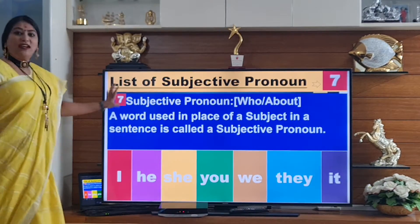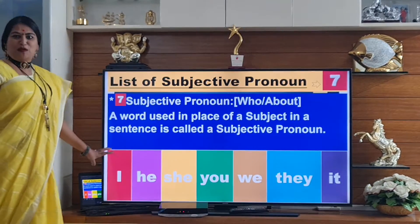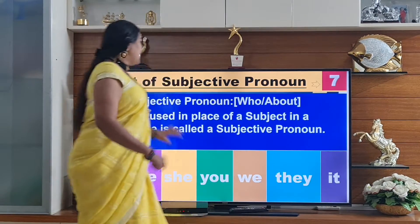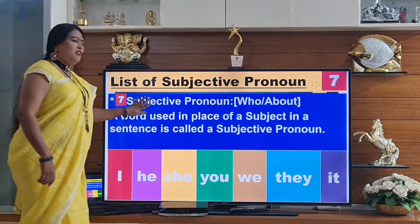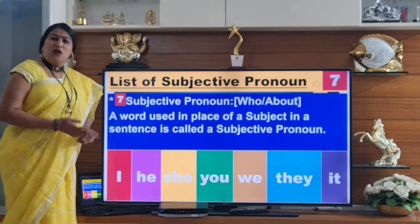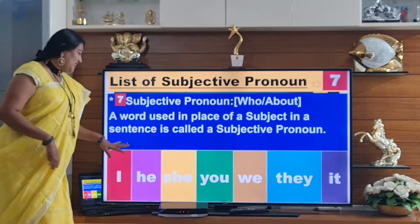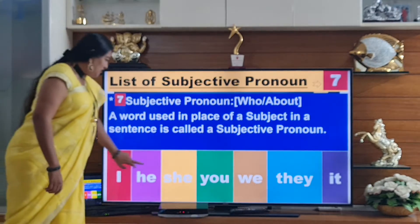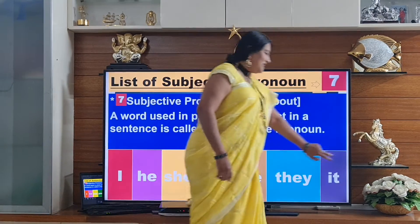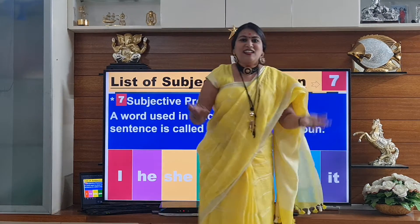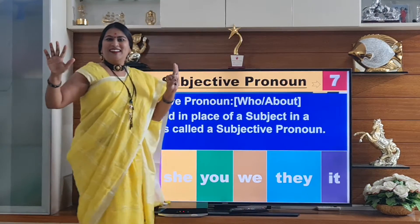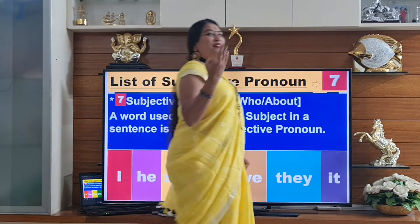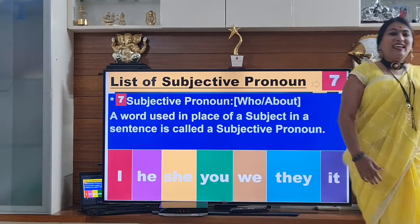Now let's see what all will come in subjective pronoun. There are 7 pronouns — remember: I, he, she, you, we, they, it. That's the list of 7 subjective pronouns.